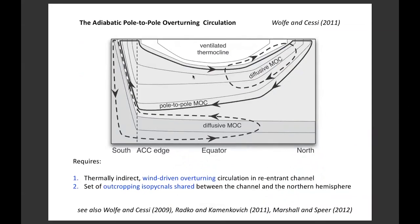The potential for an adiabatic pole-to-pole overturning circulation was clearly illustrated in a paper by Wolfe and Cessi. They used a zonally averaged analytical model in combination with coarse and high-resolution numerical simulations to show that in a single ocean basin connected to a reentrant channel, it's possible to have an adiabatic circulation provided you have two things: first, a thermally indirect wind-driven overturning circulation in the reentrant channel — a way of lifting dense water to the surface without transforming its density — and second, a set of outcropping isopycnals that are shared between the two hemispheres. In the limit of weak diapycnal interior diffusion, the net overturning and therefore the northward heat flux must be dominated by this adiabatic cell.